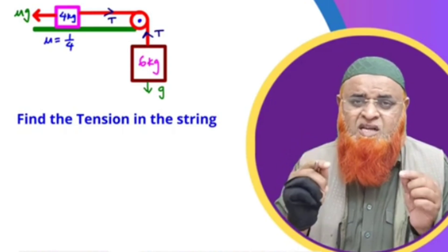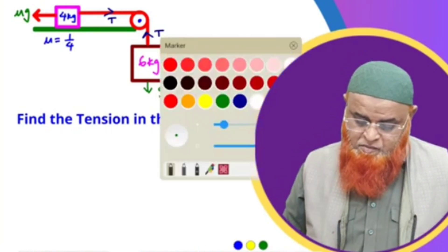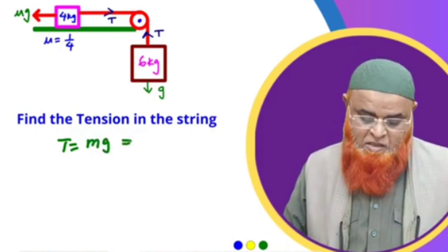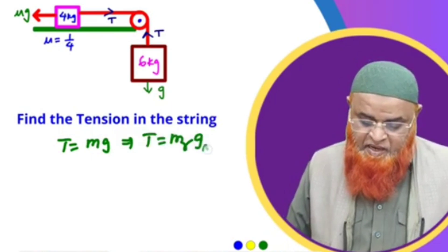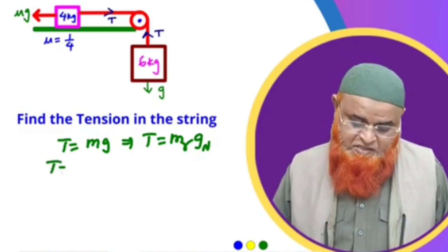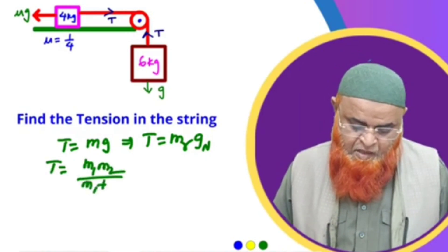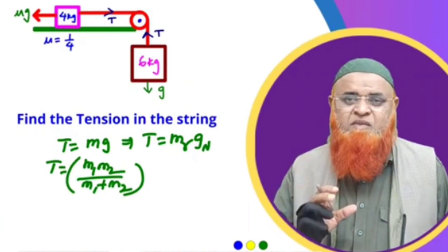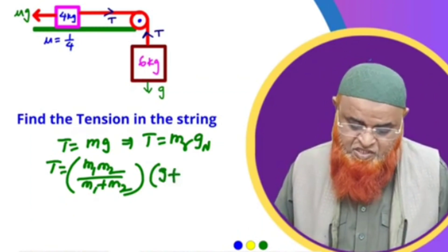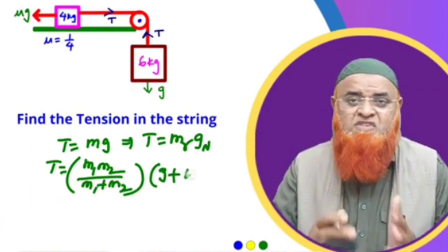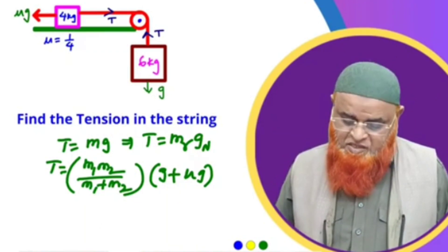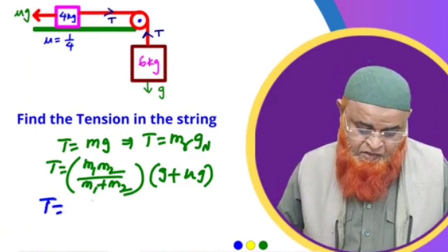No need to memorize any formula or draw a free body diagram — basic Newton's second law can solve this. Tension T equals reduced mass into net acceleration. Reduced mass is m1·m2 divided by (m1 + m2). Net acceleration accounts for gravity g from the hanging body and friction mu·g opposing the resting body.